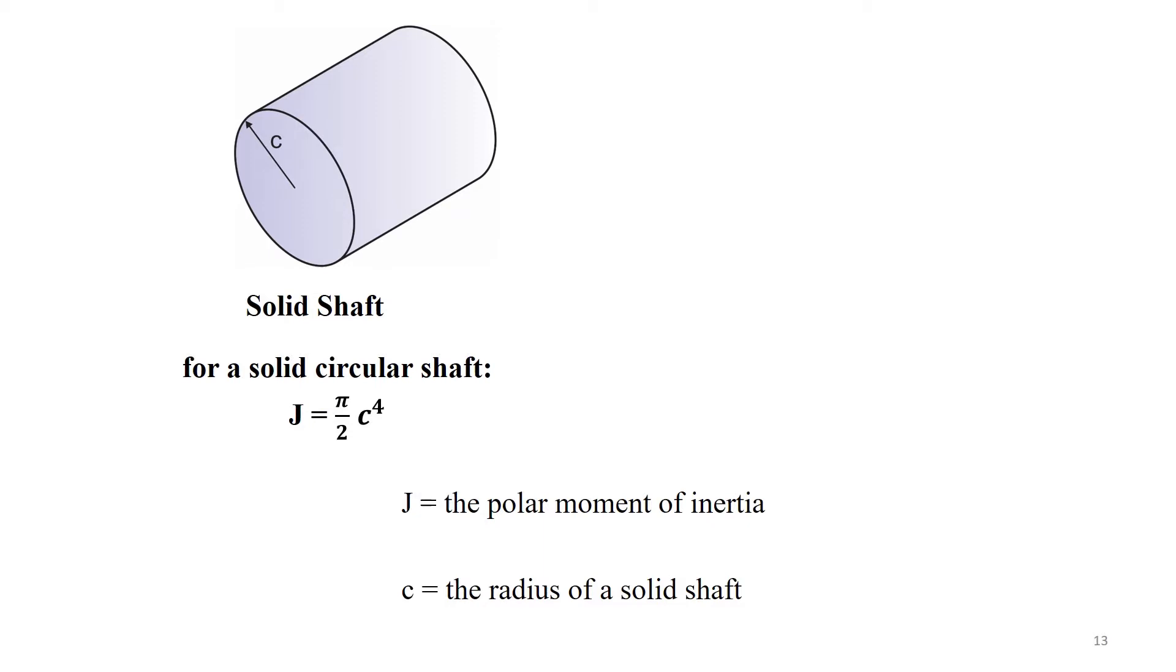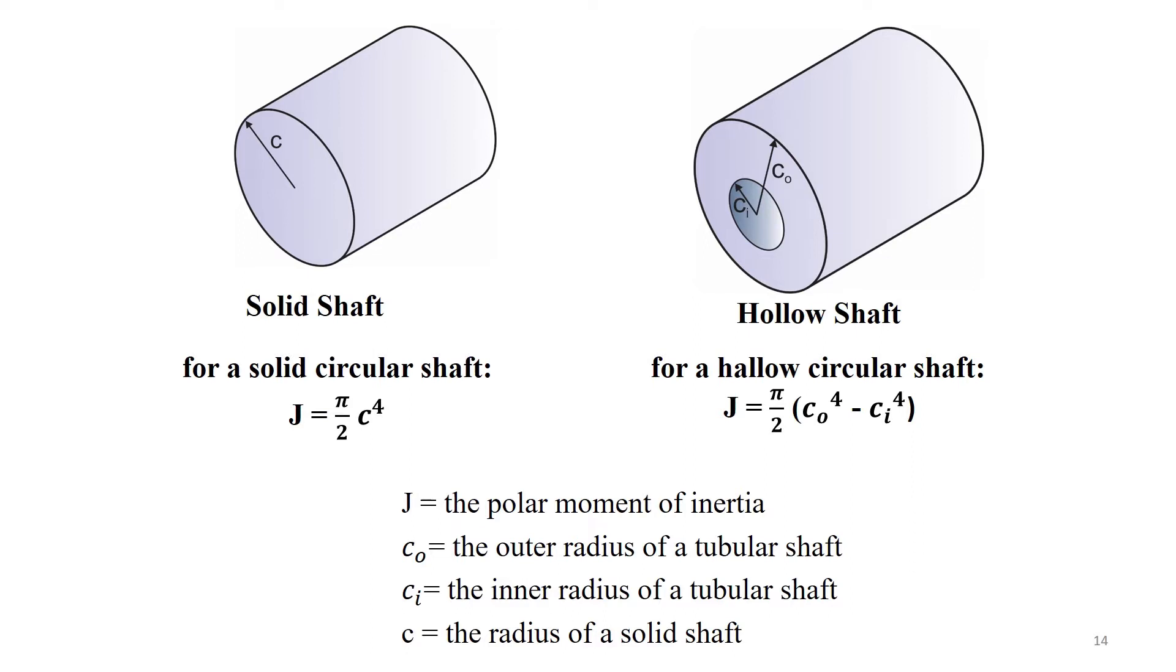For a hollow circular shaft with the inner radius of C i and outer radius of C o, the polar moment of inertia, J, is J equals pi by two times the outer radius to the power of four